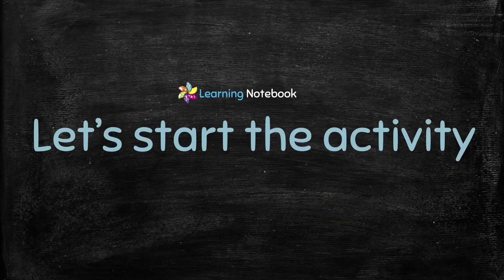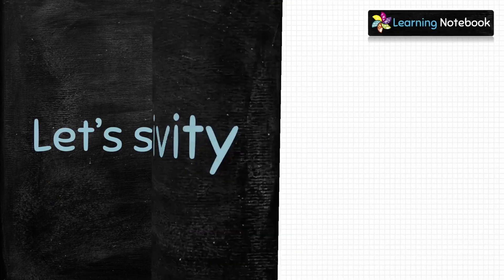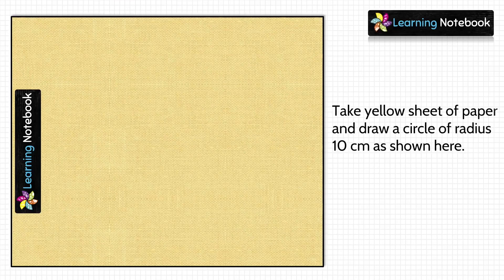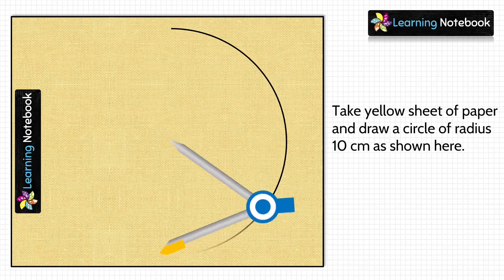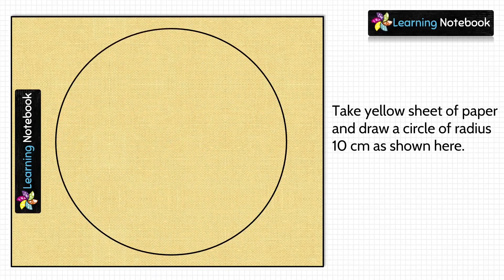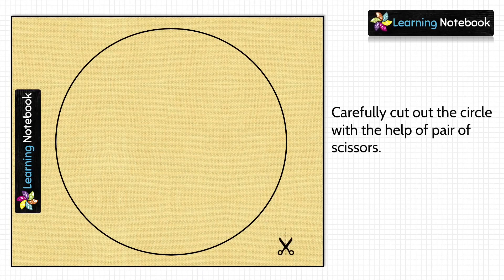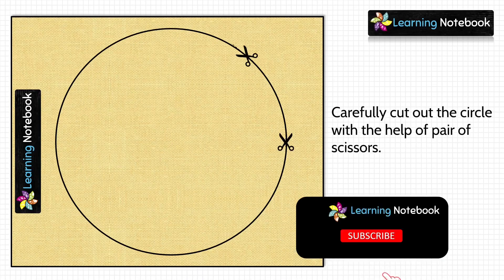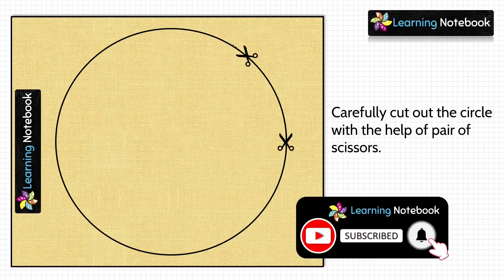Now students, we are going to start with our activity. In the first step, take one yellow sheet of paper and draw a circle of radius 10 cm on it. Then carefully cut out this circle using a pair of scissors.